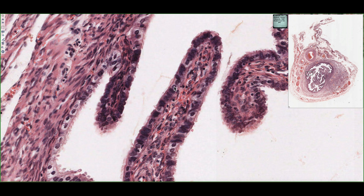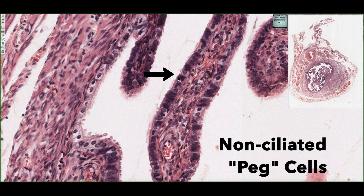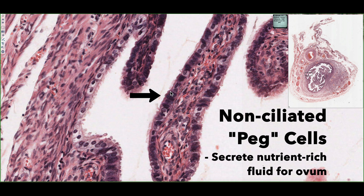Among these ciliated cells, we see cells that are more basophilic and more bulbous in shape as they project a little further into the lumen. These are known as non-ciliated cells because they lack cilia on the apical surface, but they're also known as peg cells. They're named because they look like they've been hammered into the mucosal lining — somewhat like the appearance of a golf tee. They secrete a nutrient fluid that helps support the ova during its travels toward the uterus.